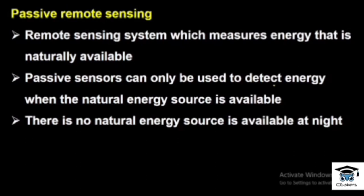Passive remote sensing is a system which measures energy that is naturally available. For example, a passive sensor can only be used to detect energy when a natural energy source is available. When there is no natural energy source available — such as at night — passive remote sensing cannot function. There is no advanced or own energy source in passive sensing.